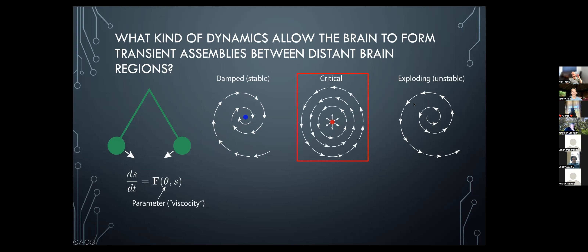This simple reasoning suggests that stability of brain dynamics is something the brain should care about. If the dynamics are too stable, no stimuli will perturb brain activity. If too unstable, any noise makes the system unworkable. So perhaps somewhere in a Goldilocks zone between these two extremes is where the brain should operate.